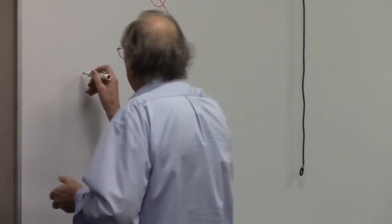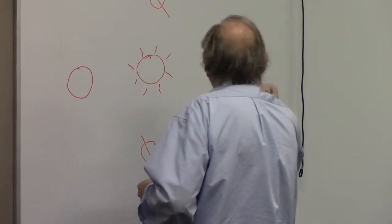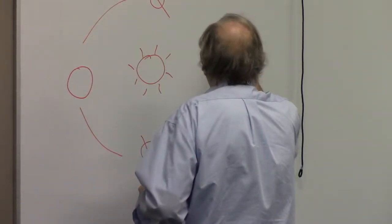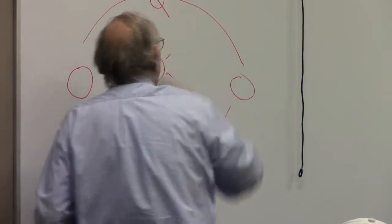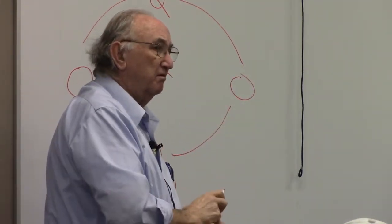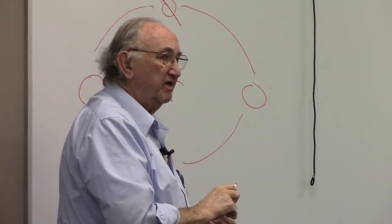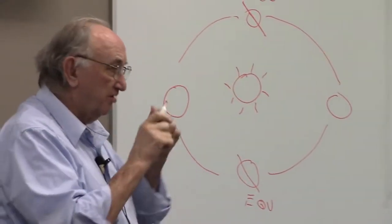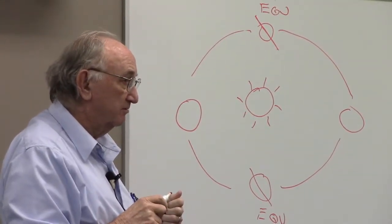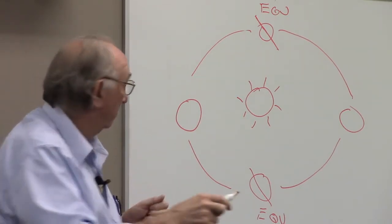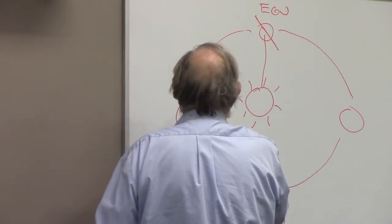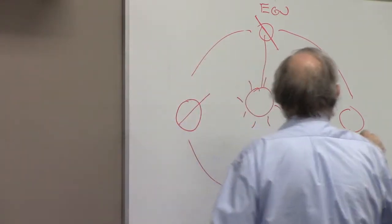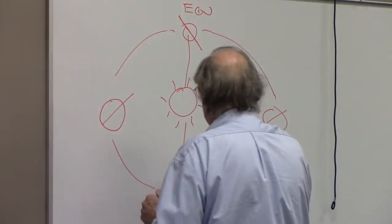The Earth is rotating around the sun in this orbit. You have a plane that your satellite is rotating around the Earth. What happens to that plane during a sun-synchronous orbit? There's something very special that happens to it. The angle with respect to the sun stays the same.